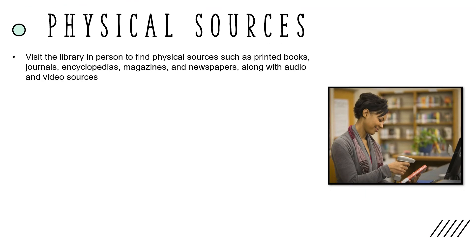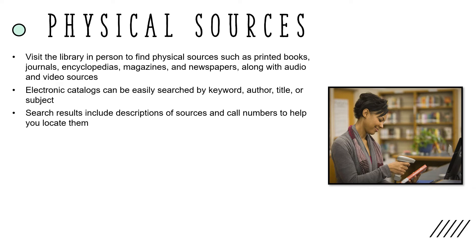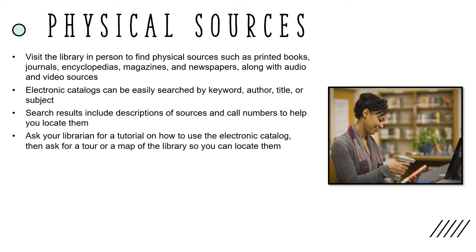You can visit the library in person to find physical sources such as printed books, journals, encyclopedias, magazines, and newspapers, along with audio and video sources. Most libraries have an electronic catalog of all of their physical sources that can be easily searched by keyword, author, title, or subject. Search results include descriptions of the sources and call numbers to help you locate them on the library's shelves. Ask your librarian for a tutorial on how to use the library's electronic catalog to find sources, then ask for a tour or a map of the library so you can locate them.